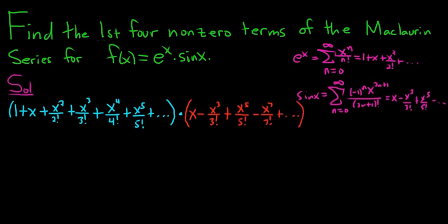We have to find the first four non-zero terms of this product. First realize there are no constant terms, because if you take 1 and multiply it by any of these, you're not going to get a constant. So start with the x terms. If we take 1 and multiply it by x, we get x. There's no other way to get an x term — x times x gives x squared. So for x terms, it's just going to be x.